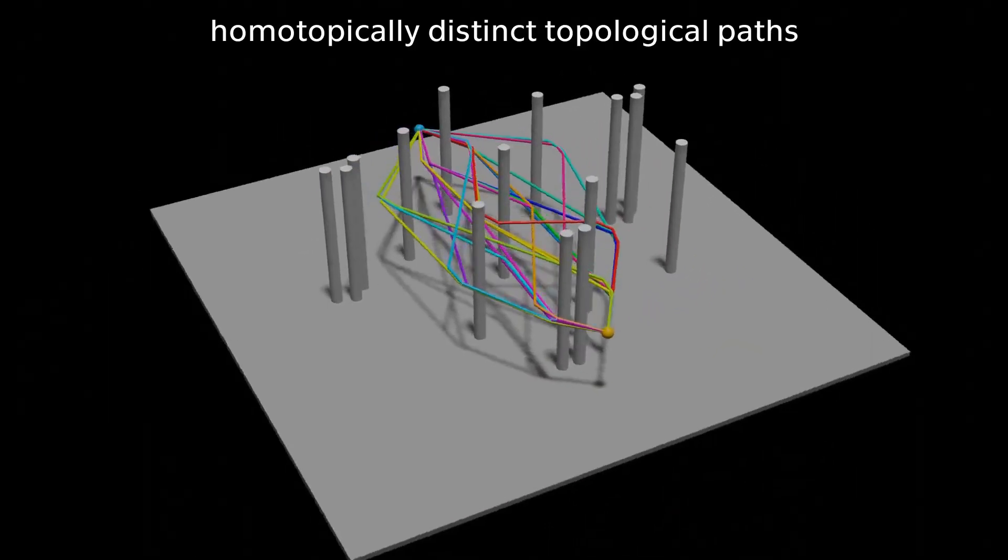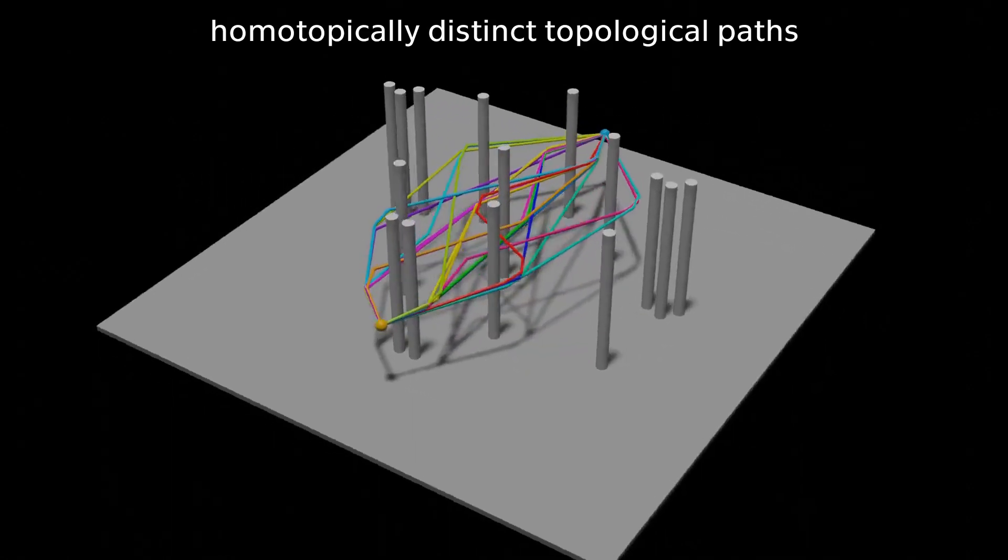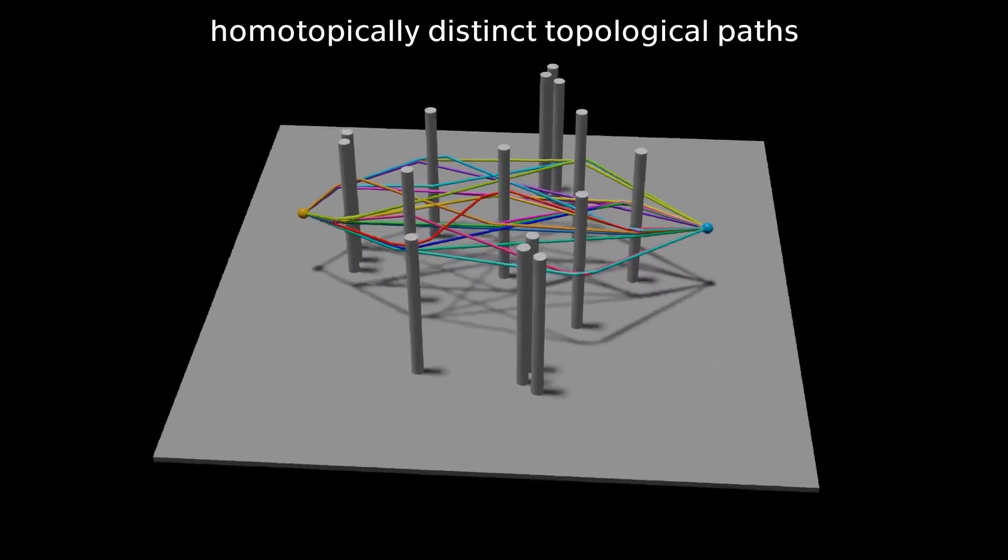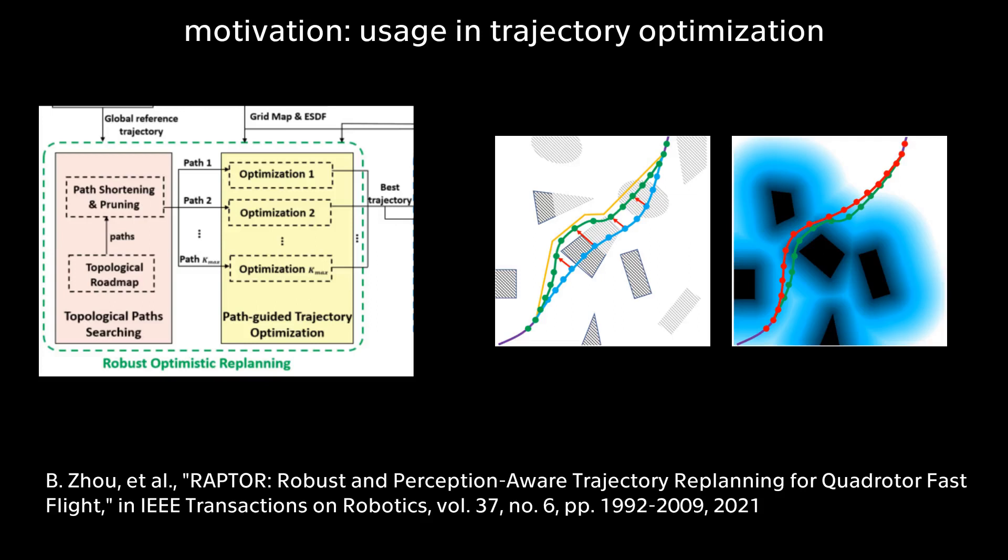Finding multiple homotopically distinct paths is of great benefit in many applications. Most optimization-based trajectory planners are restricted to a single homotopy class. Therefore, multiple homotopically distinct paths are required to guarantee discovery of the optimal trajectory.